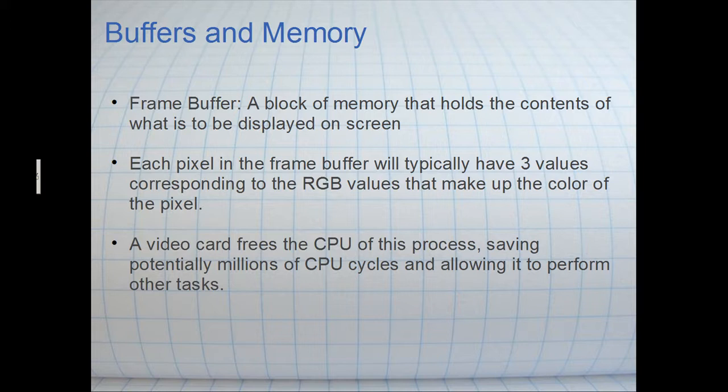And what the framebuffer does is it stores what is going to be displayed next on the frame. It's basically a giant array of pixel locations and pixel values. And it sends it to the screen after that. So each pixel in the frame will typically have three values corresponding to the RGB values that make up the colors of the pixel.